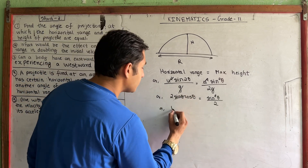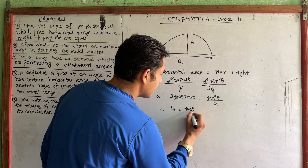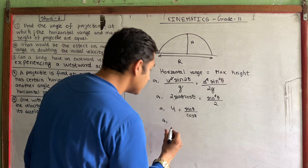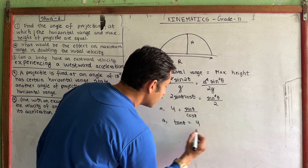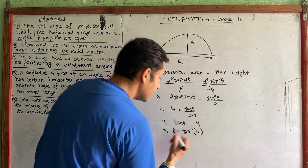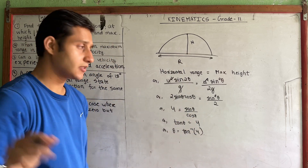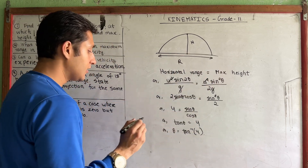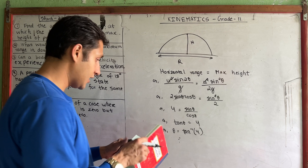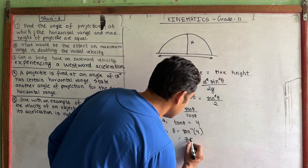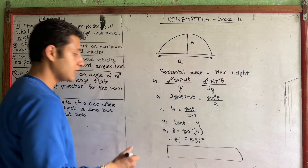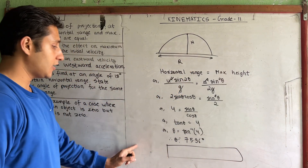Simplifying: 2 sinθ cosθ = sin²θ / 2, which gives 4 = sinθ / cosθ = tanθ. Therefore θ = tan⁻¹(4), which equals 75.96 degrees. This is the required angle of projection.